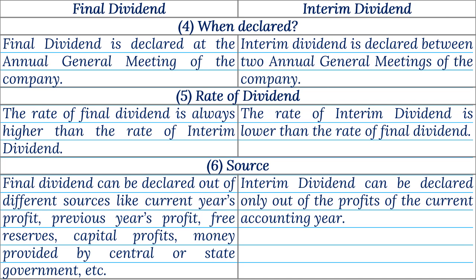Point 5 — Rate of Dividend: The rate of final dividend is always higher than the rate of interim dividend. The rate of interim dividend is lower than the rate of final dividend.